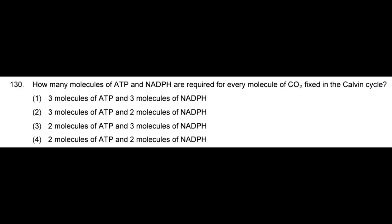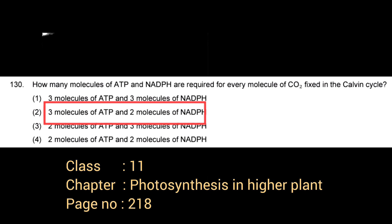How many molecules of ATP and NADPH are required for every molecule of carbon dioxide fixed in the Calvin cycle? Correct answer: option 2, 3 molecules of ATP and 2 molecules of NADPH.